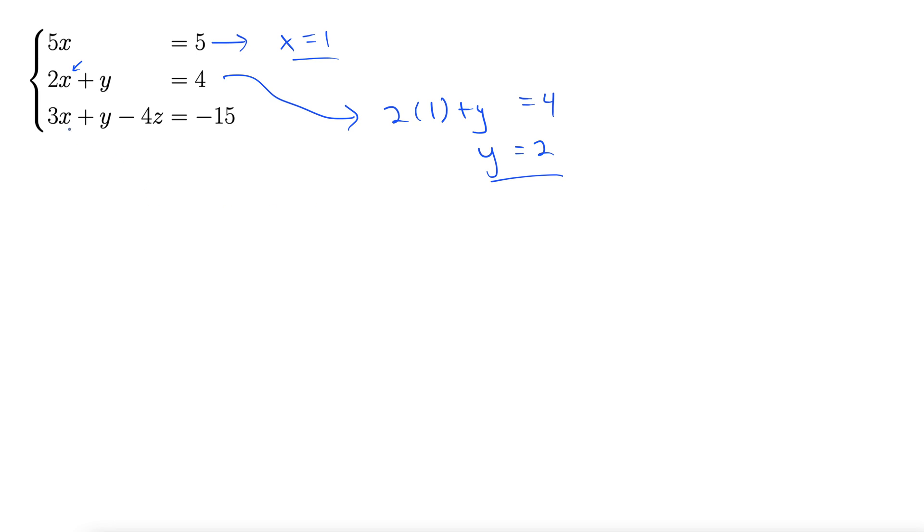Now we have x and y, so we can plug in right here to get z. So I'm plugging in x right there, y right there. We have 3 times 1 plus, well, y is 2, so 2 minus 4z equals negative 15.